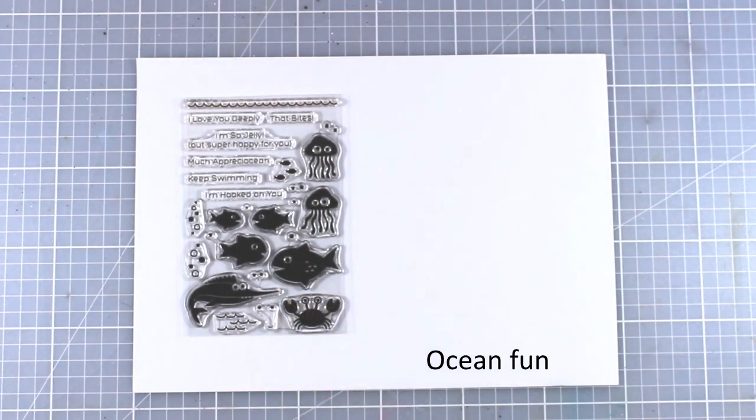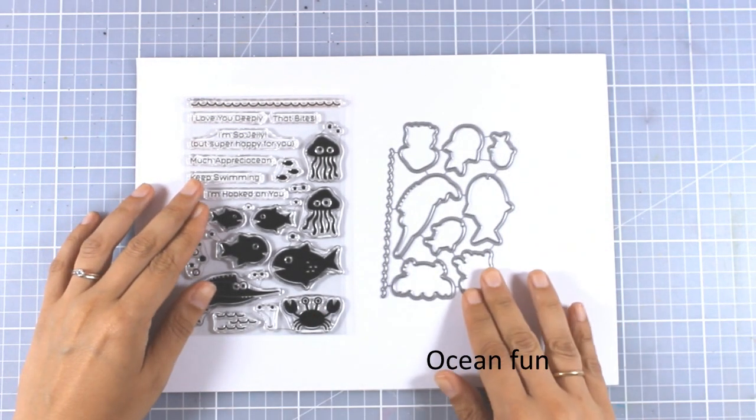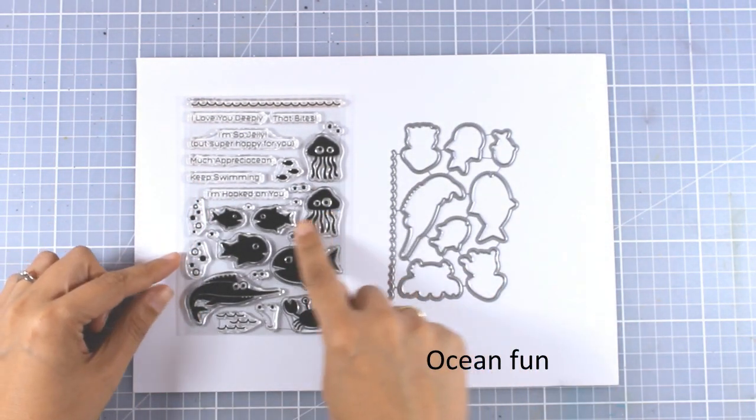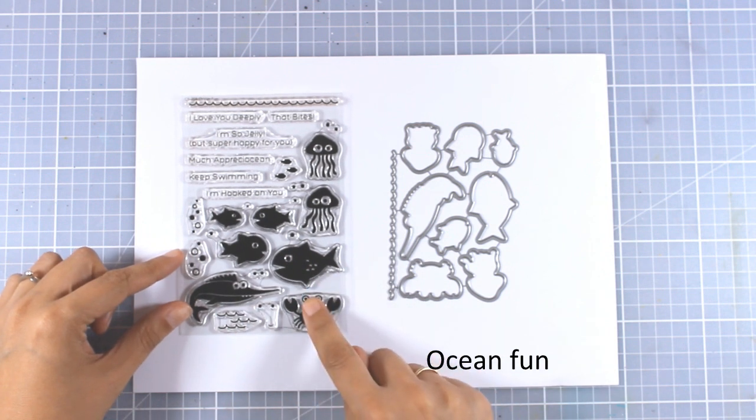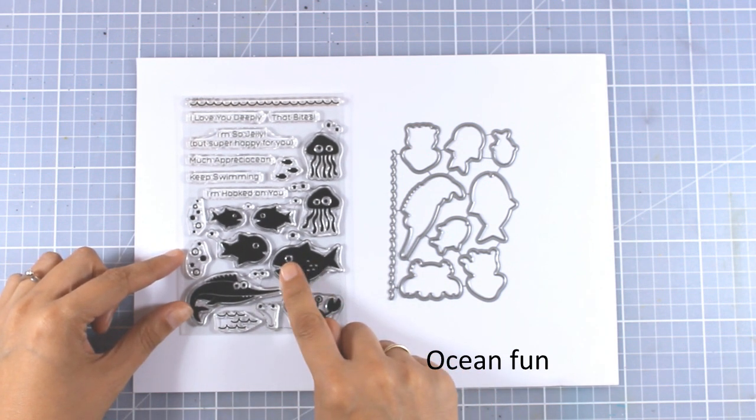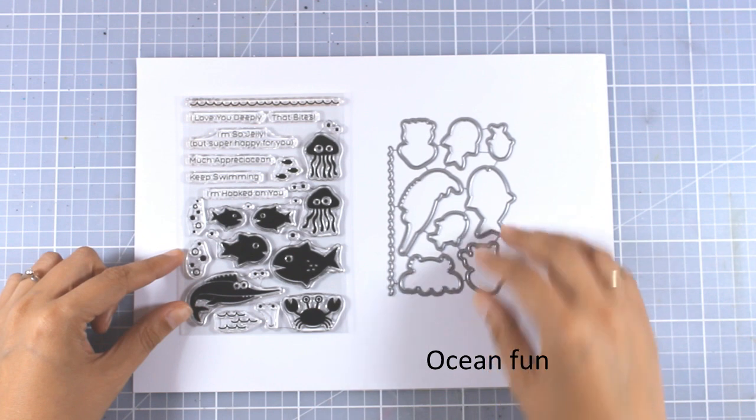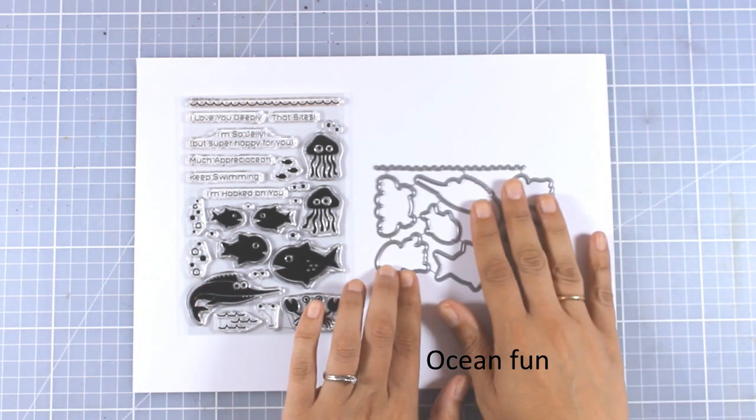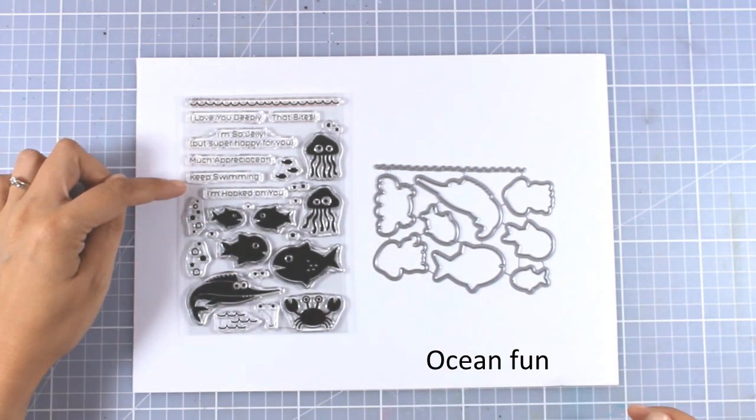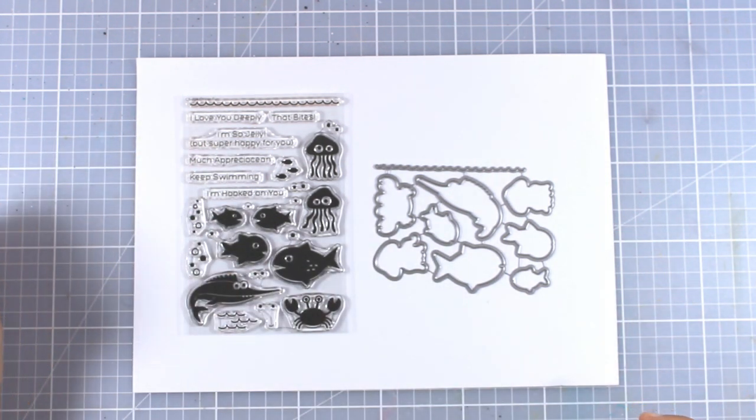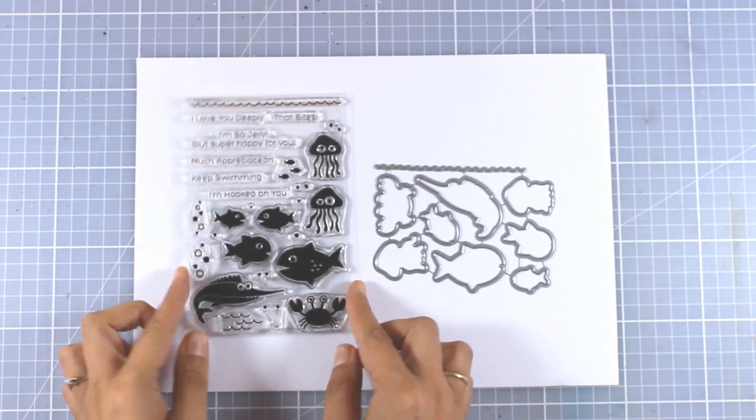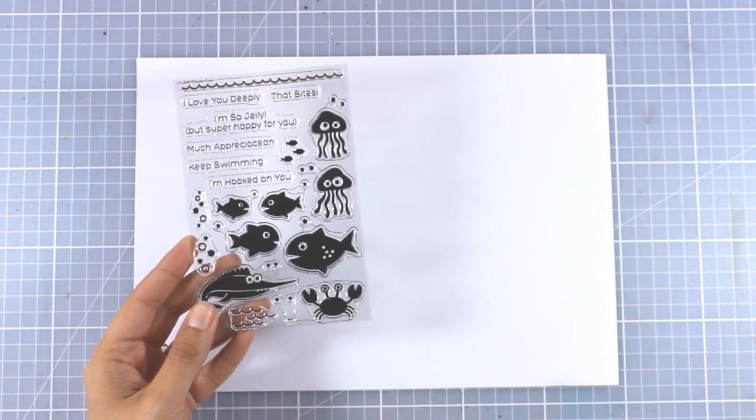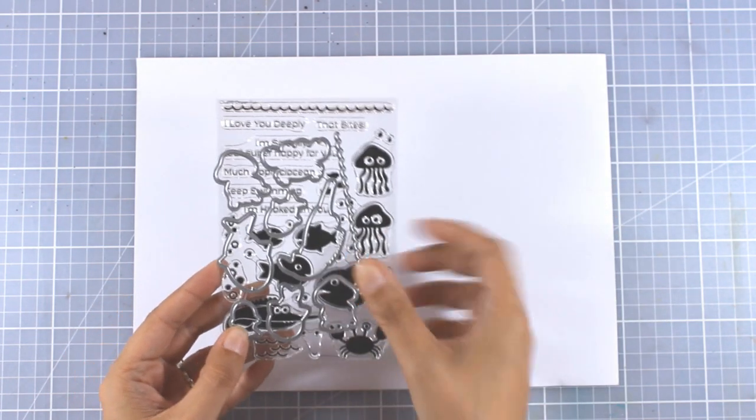Since summer is already here in Greece and you know how much I love the sea and creating little ocean scenes, here is an adorable stamp set called Ocean Fun. I just love the solid design because you just stamp, cut out, and you are ready to go. There are also matching dies, and I love that they give you this big wave border. There are fun sentiments in this set such as I'm so jelly but super happy for you, that bites, I love you deeply, and many more.